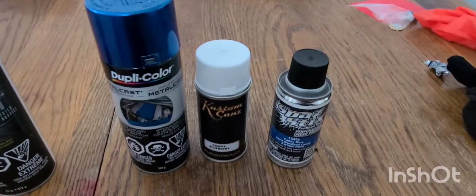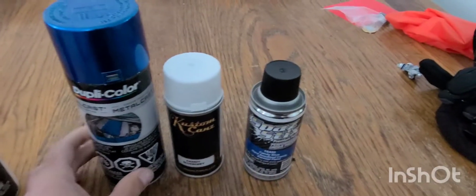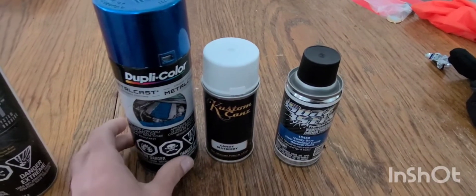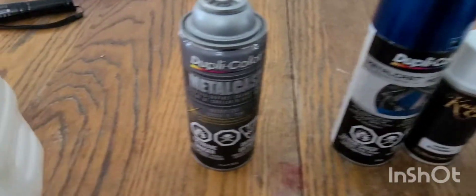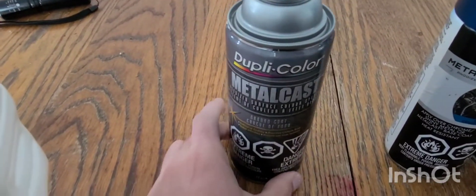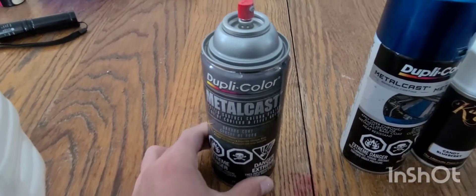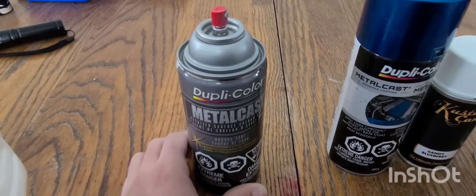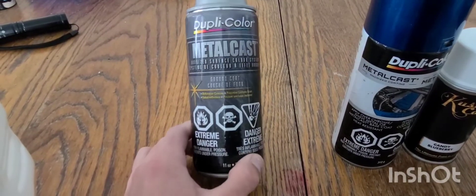G'day guys, today we're going to be testing out candy blue color paints for a base coat. I got this Dupli Color Metal Cast. It's got some sparkles in it. A lot of people I believe use the sparkly base coat.